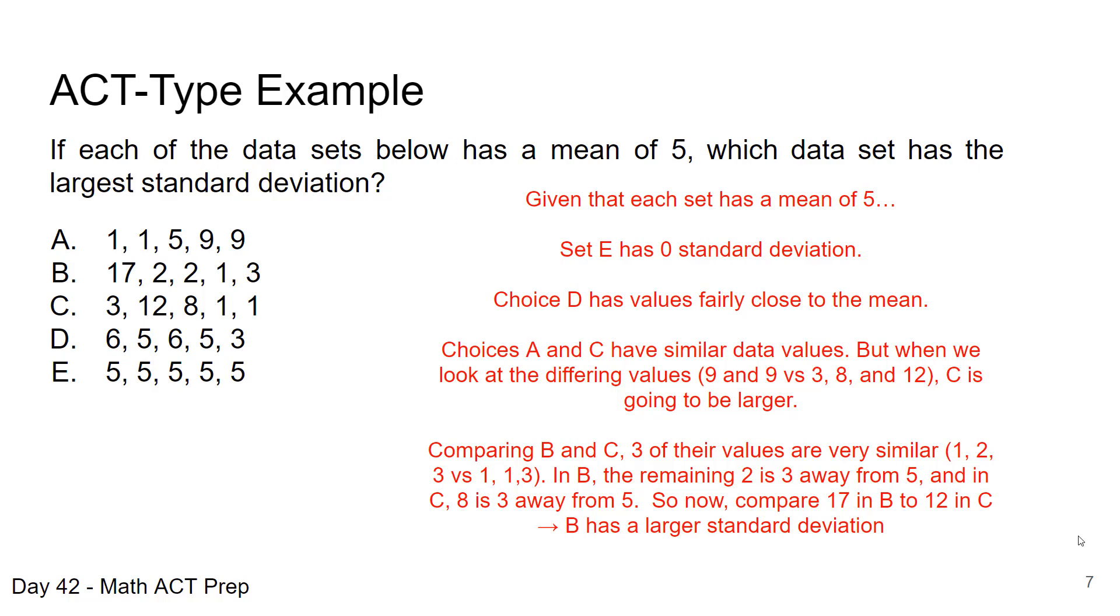So in B, when we eliminate 1, 2, and 3, we still have a 2 and a 17 left. And with C, we have 8 and 12.